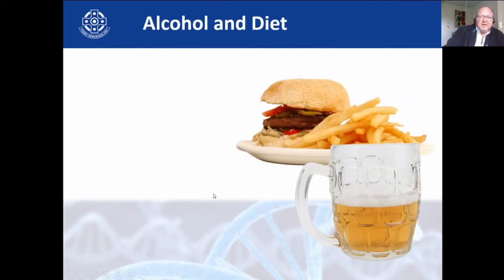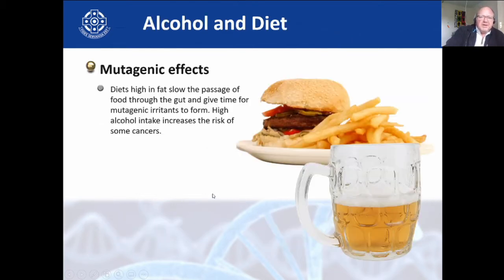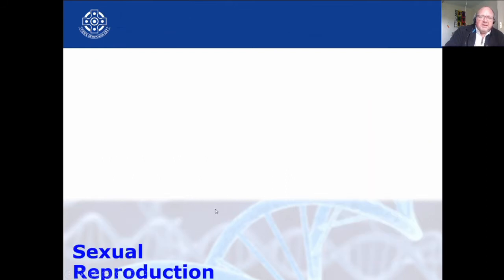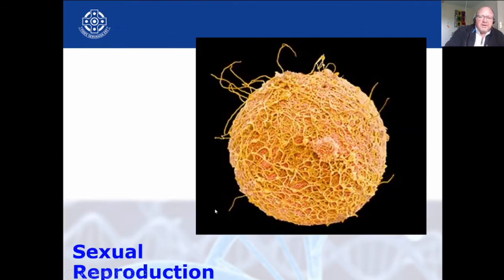Environmental poisons — we talk about mutagens: chemicals, tobacco, smokers, coal and mining workers, and so forth. Alcohol and diet: if you have a diet high in fat and very high in alcohol, then it can become a problem.